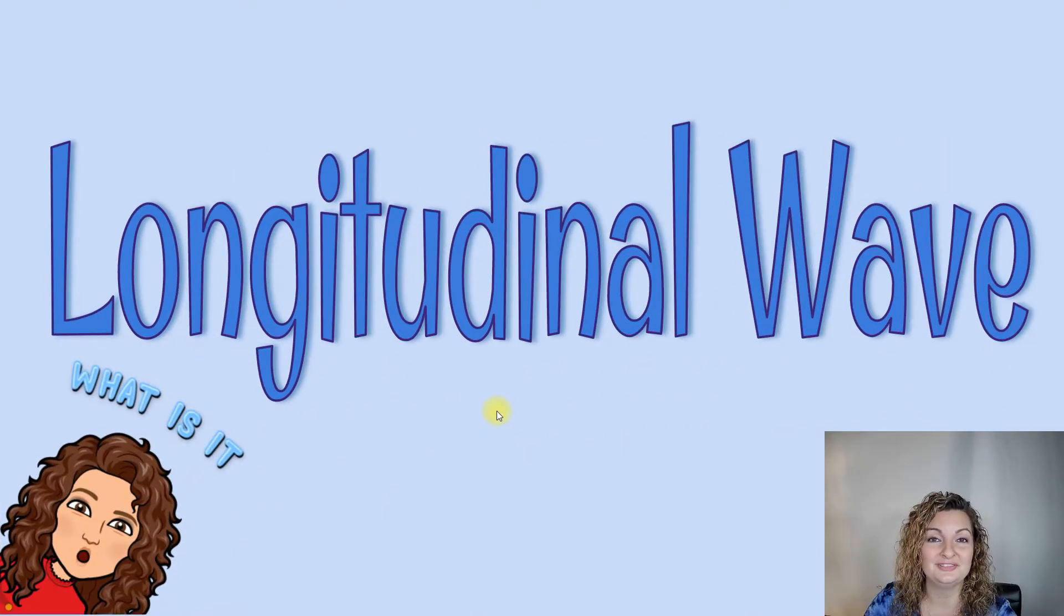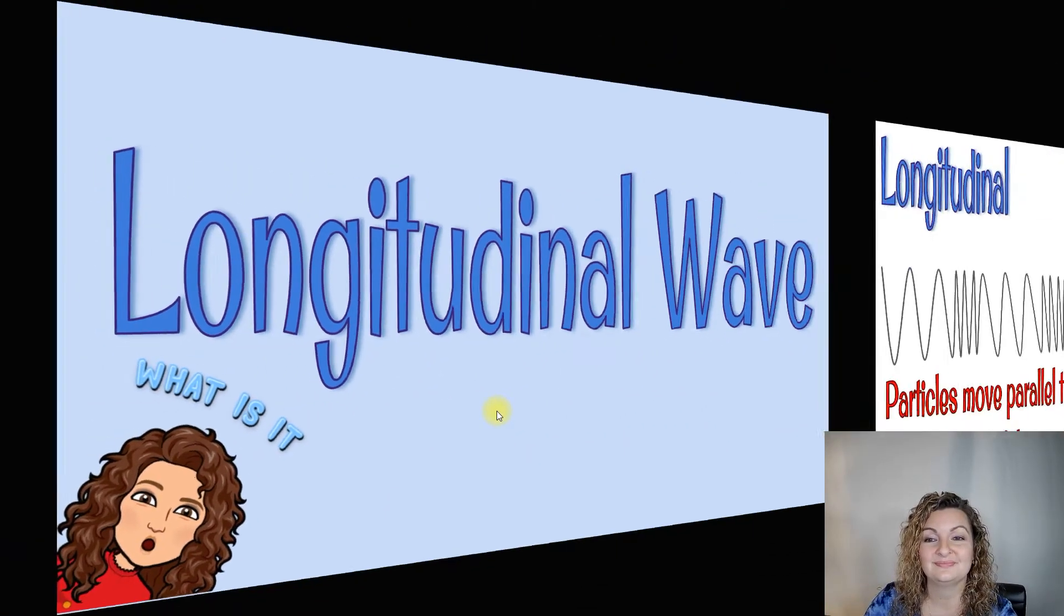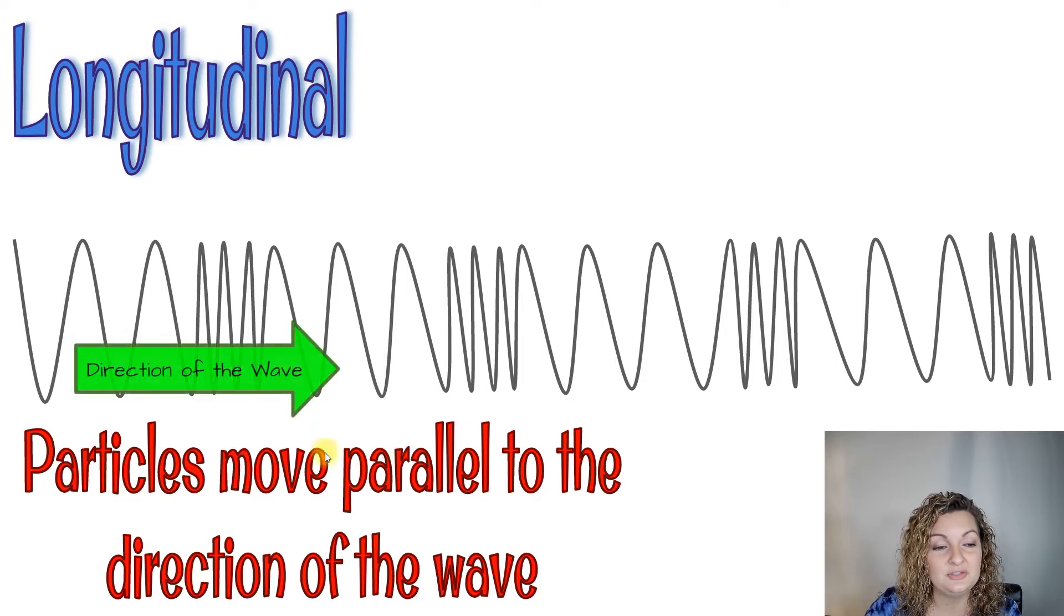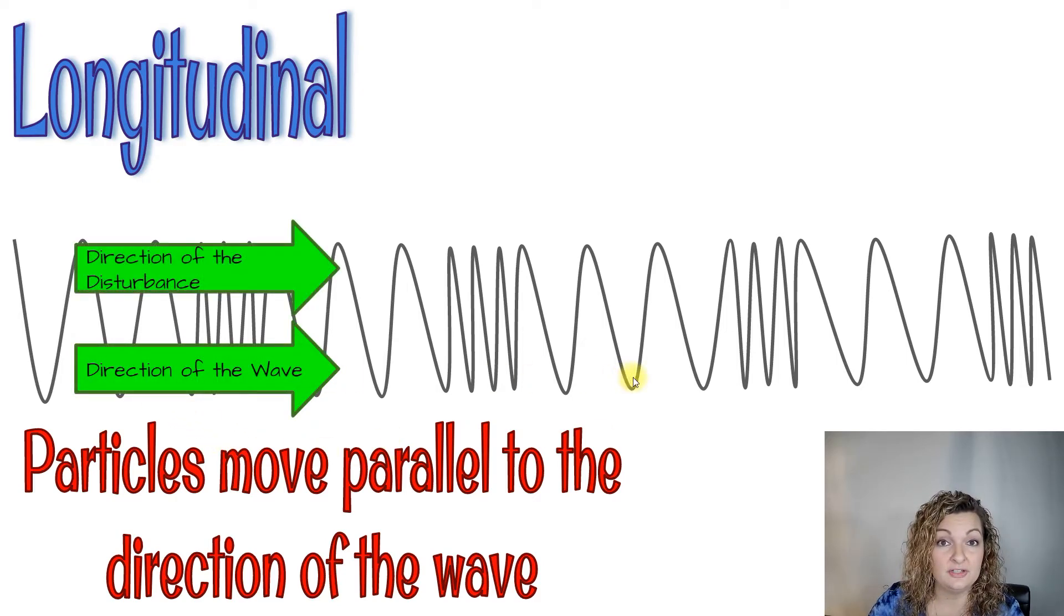Longitudinal wave. So longitudinal waves the particles move parallel to the direction of the wave. So in this case we have the direction of the wave moving forward we would have to have our disturbance moving in that same direction forward and backwards. So think about like pushing a slinky that would do it. So this is going to be in the same direction therefore we call it parallel and that makes it a longitudinal wave.